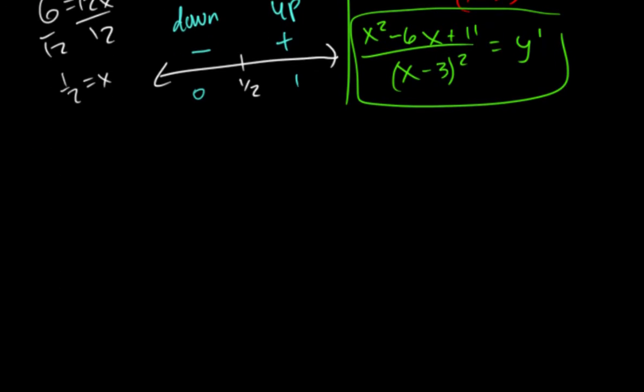We need the second derivative, though. I'm going to call this U. Call this V. U prime, V prime. We're just using quotient rule again. So U prime is going to be 2x minus 6. V prime is going to be 2. Rewrite the inside, and then multiply by the derivative of the inside, which we don't really need for that one.